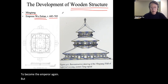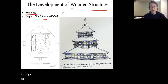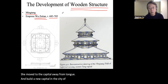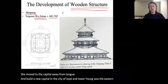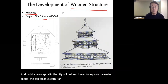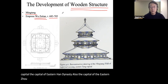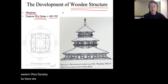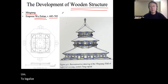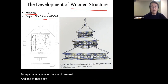One of her key efforts was to relocate the capital from Chang'an to Luoyang. Luoyang was the eastern capital—the capital of the Eastern Han dynasty and also of the Eastern Zhou dynasty. There she built a series of buildings to legalize her claim as Son of Heaven, and one of those key buildings was the Ming Tang.